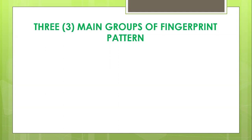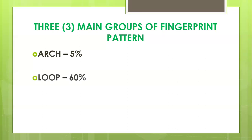There are three main groups of fingerprint pattern. We have first the arch pattern, the loop pattern, and the third one is the whorl pattern. Most people have a loop pattern — in fact, 60% of people have a loop pattern, followed by whorl patterns which comprise 35%, and 5% for arches.